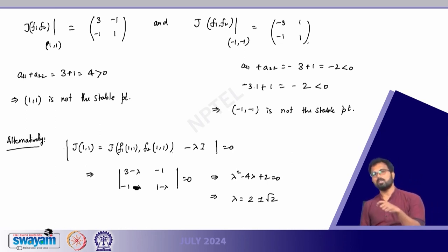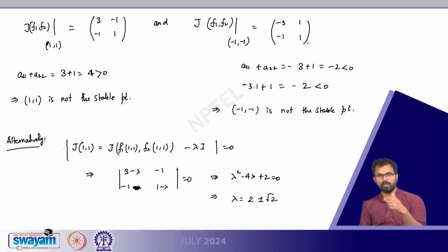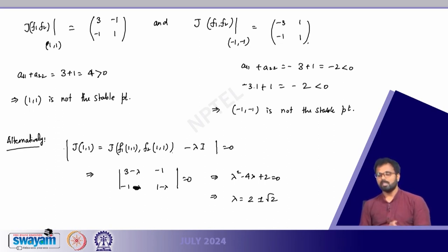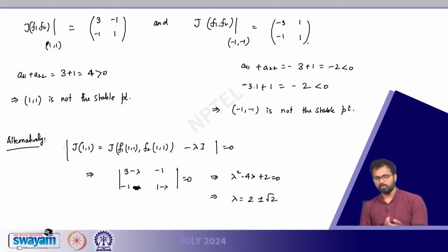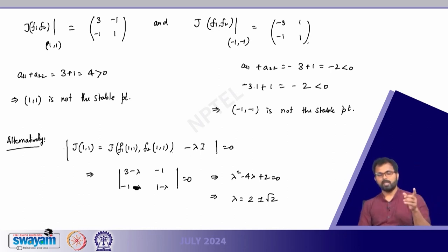Since √2 ≈ 1.414 and we have λ = 2 ± 1.414, both eigenvalues λ1 and λ2 are positive, confirming an unstable solution. It is easy to verify: whether you work with the original equation or the transformed one, the same conclusion holds.